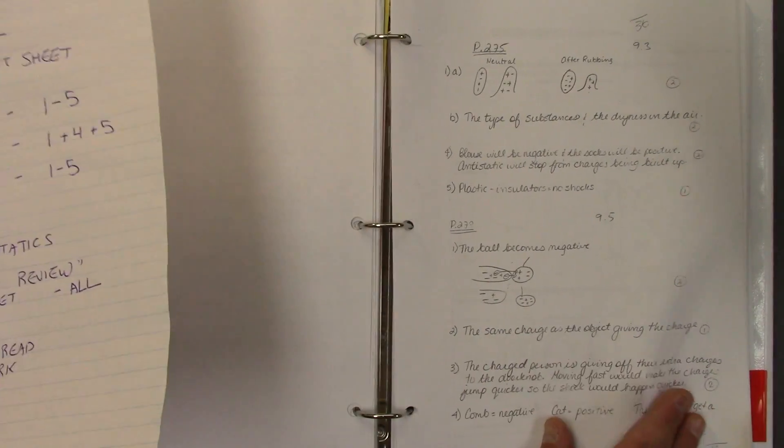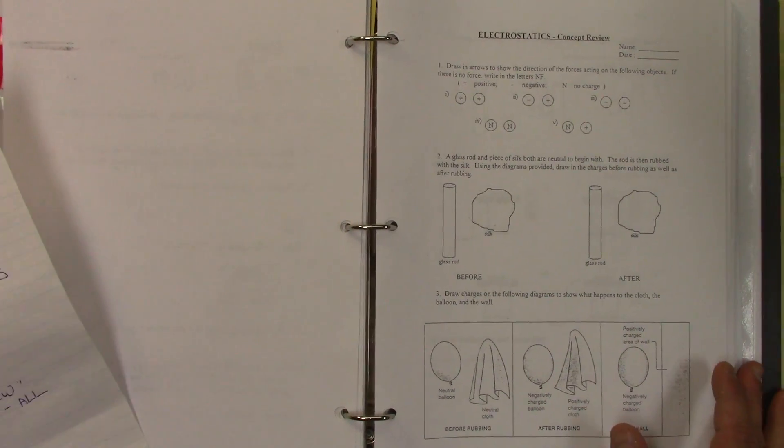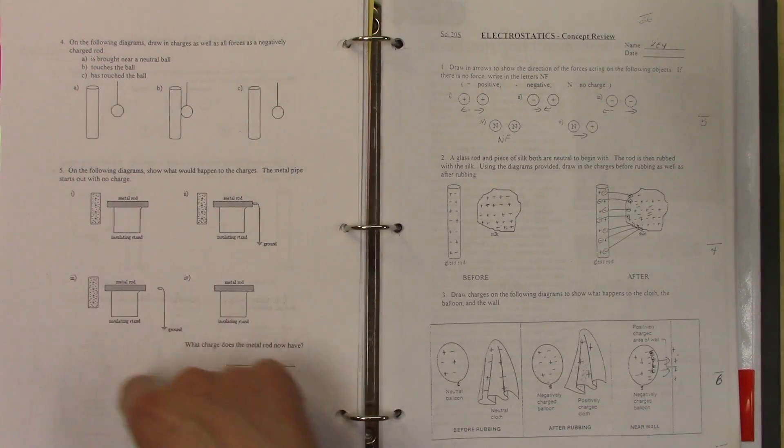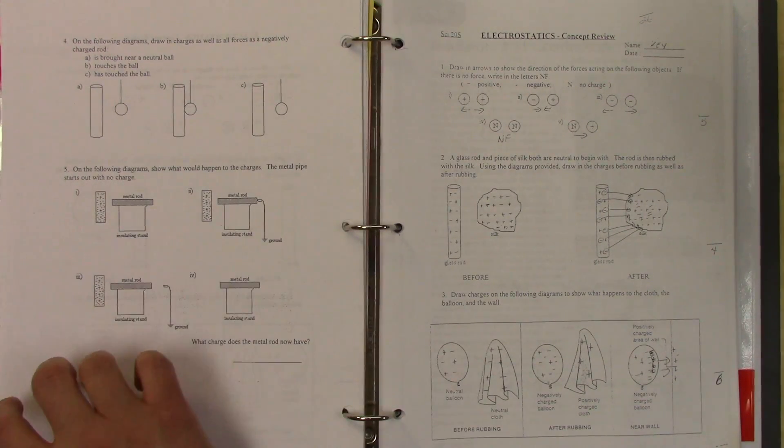Then you'll move on to the electrostatic concept review sheet here, and you will do the backside of that. This is the hardest question you'll have to do, and it will be on a test type of situation. So that's what you're doing.